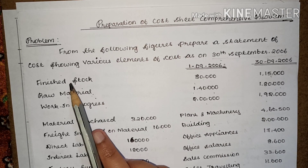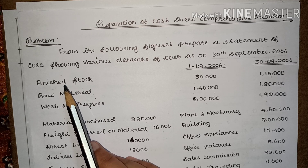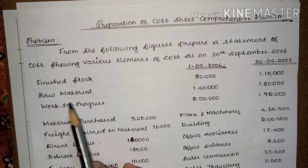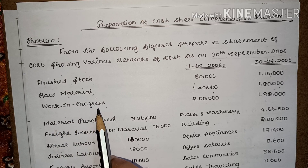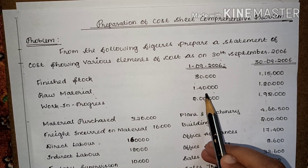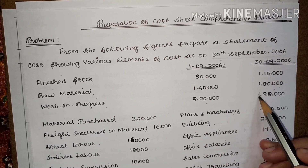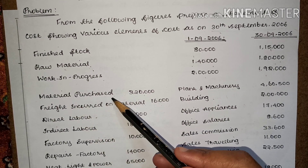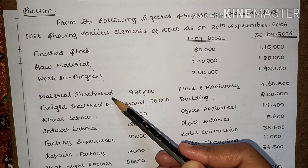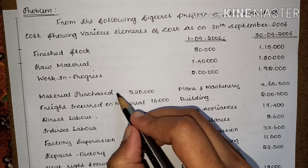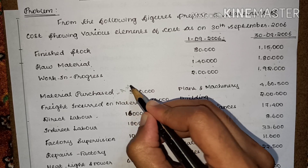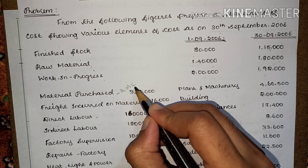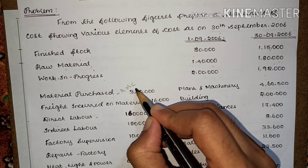In the first phase, they have given details about the inventories — finished goods, raw material, and work in progress. Opening and closing amounts are given for all three. Below that, they have given material purchase, which we will use for finding raw material consumed. Write it as raw material consumed so that you will not forget this item.